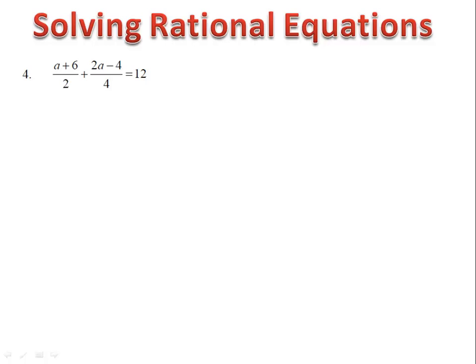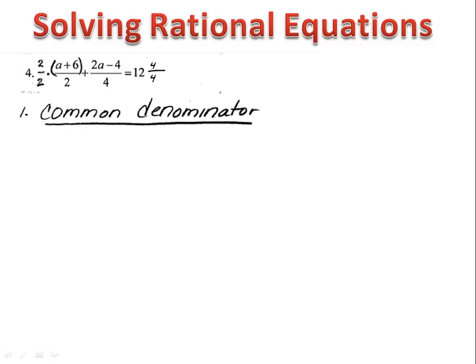Next, let's take a look at example 4. Example 4 is at least slightly more interesting. Here we have binomials in the numerator. Notice we have an a plus 6 and a 2a minus 4. The strategy is the same. Let's get a common denominator. So we'll multiply our first fraction by 2 over 2 and we'll multiply the 12 by 4 over 4. This gives us a common denominator of 4. We now have 2a plus 12 over 4 plus 2a minus 4 over 4 equals 48 over 4.